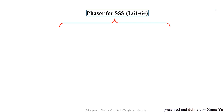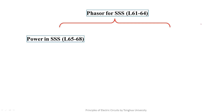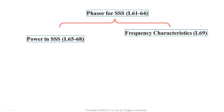In lectures 61 to 64, we have discussed in detail how to solve the SSS circuits by phasor method. From today, we will discuss the power of the SSS circuits in the following four lectures. And then we will introduce the frequency characteristics. Based on the frequency characteristics, we will discuss the filter. Analysis of SSS, its power and frequency characteristics constitute the common ground of the following contents of this course.